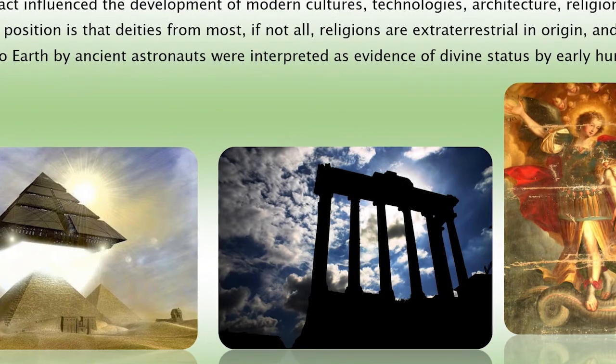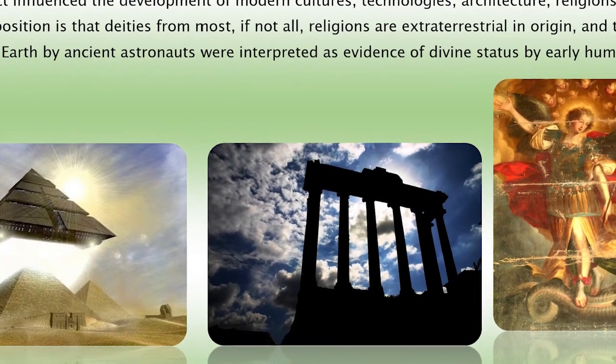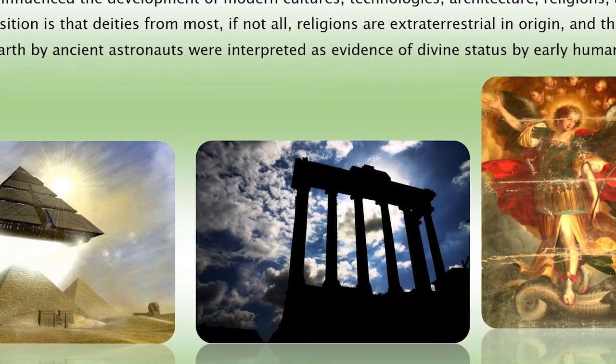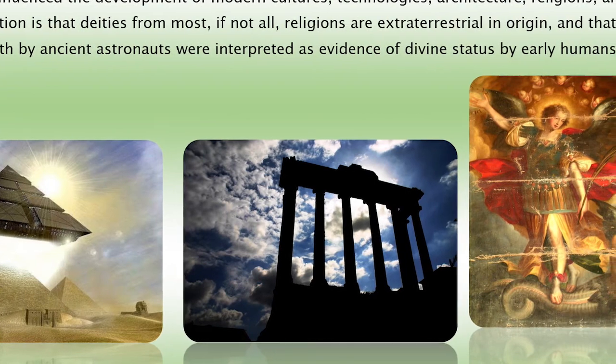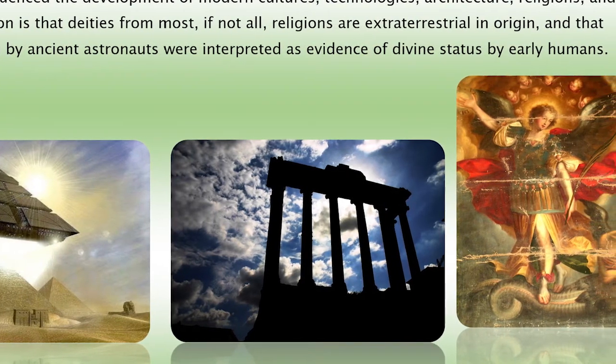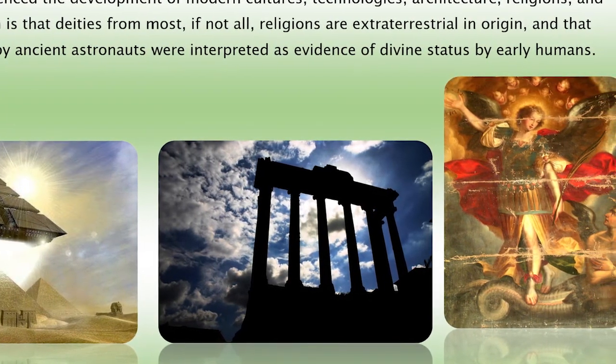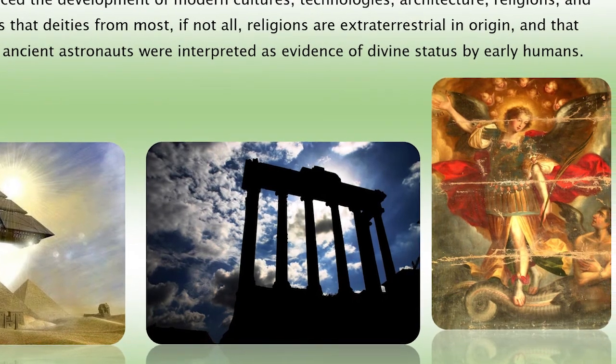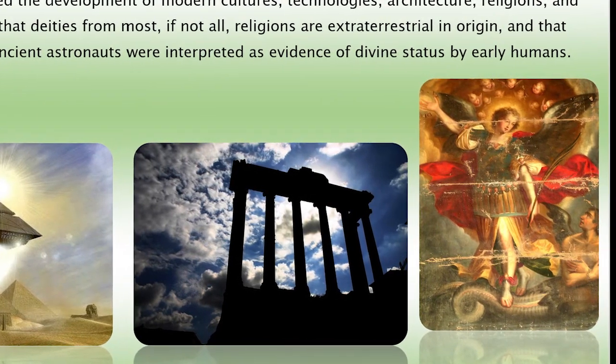A common position is that deities from most, if not all, religions are extraterrestrial in origin, and that advanced technologies brought to earth by ancient astronauts were interpreted as evidence of divine status by early humans. Basically, they're saying that these advanced cultures, different peoples, visited earth in the past and maybe influenced us or created us, to where we thought they were like gods.